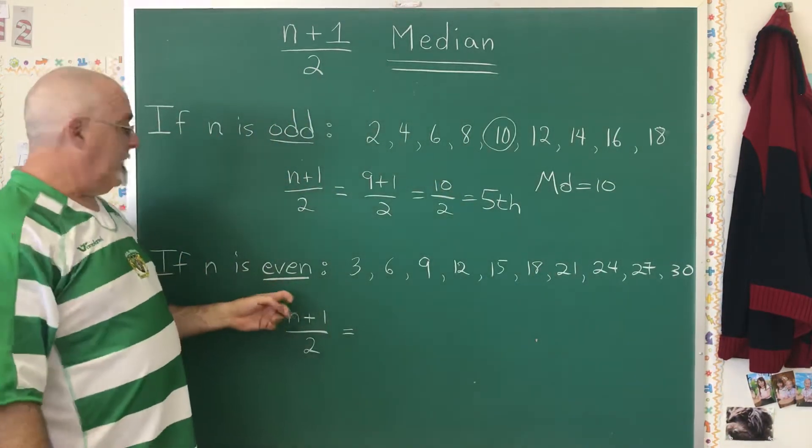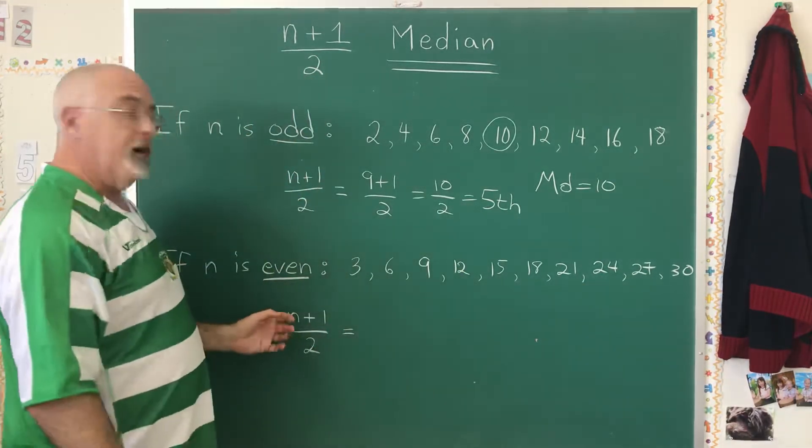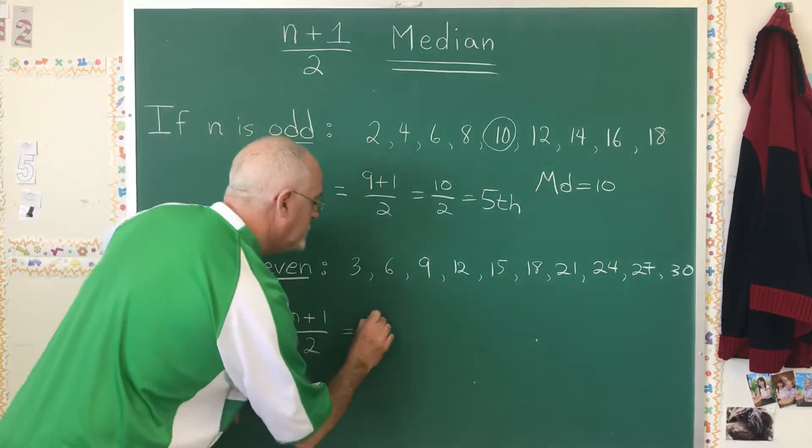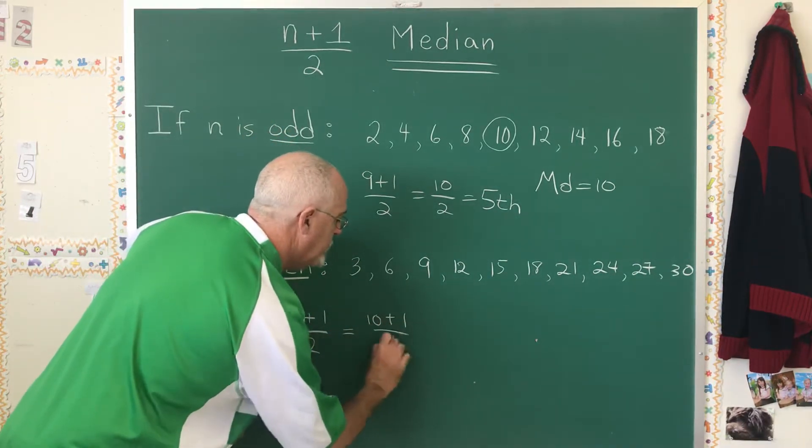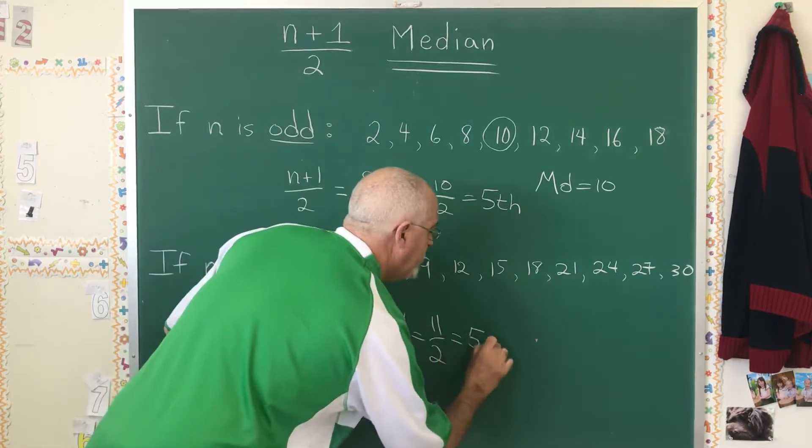In the second example, we have an even number of values. There are 10 values here. So our n, our sample size is 10. And the n plus 1 over 2 formula becomes 10 plus 1 over 2, which is 11 over 2. And that gives us 5.5.